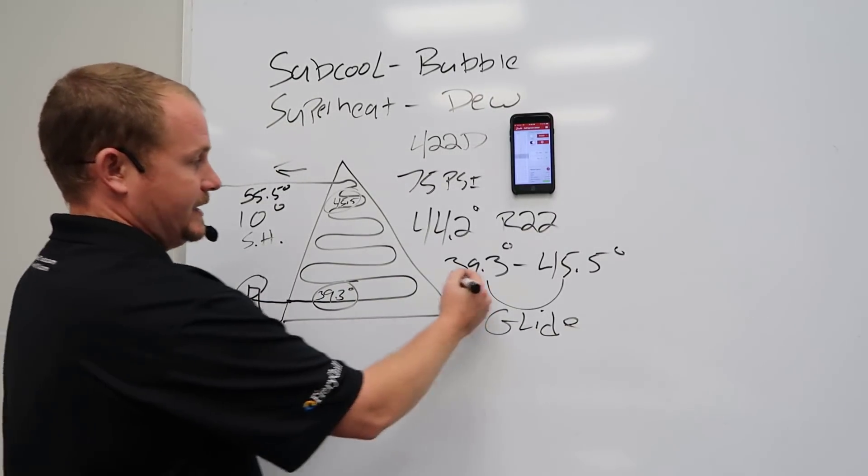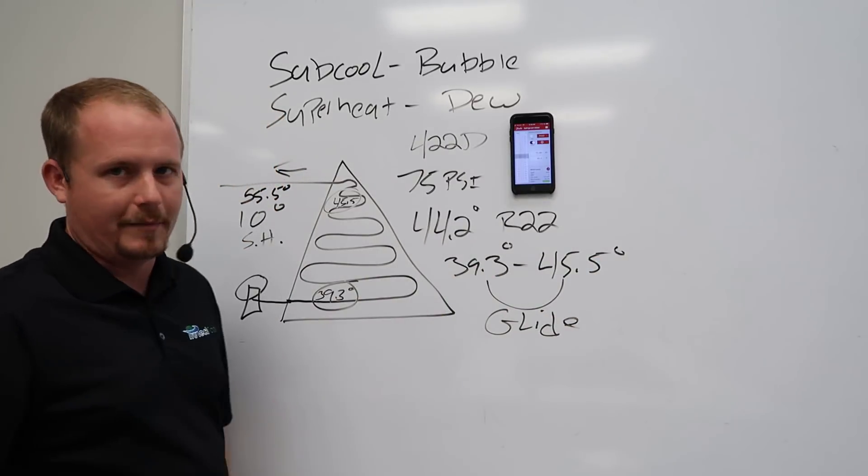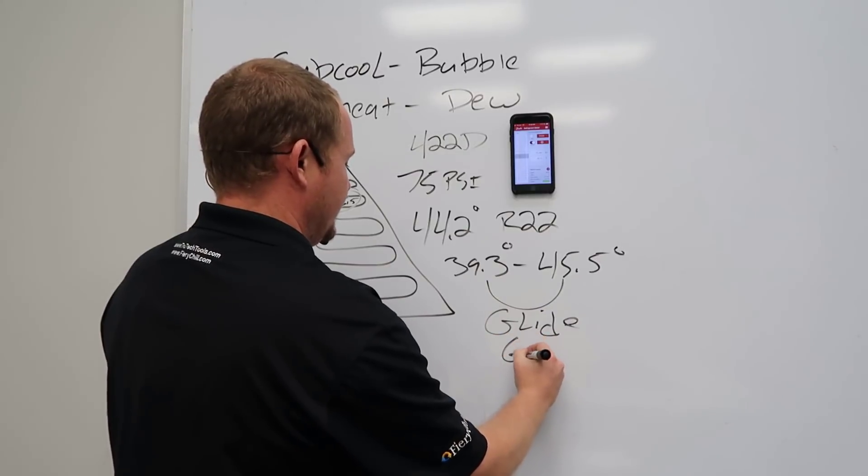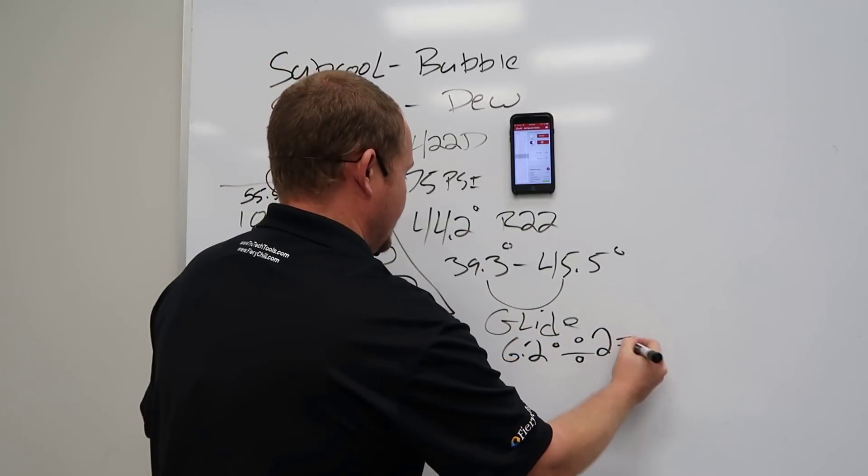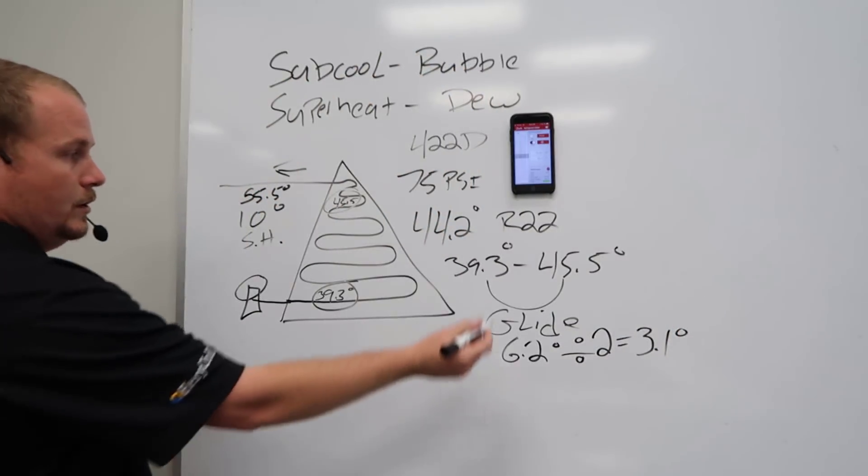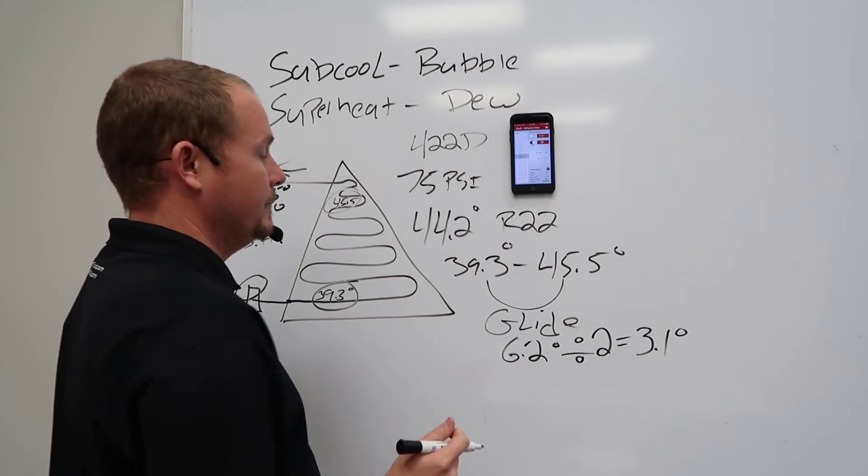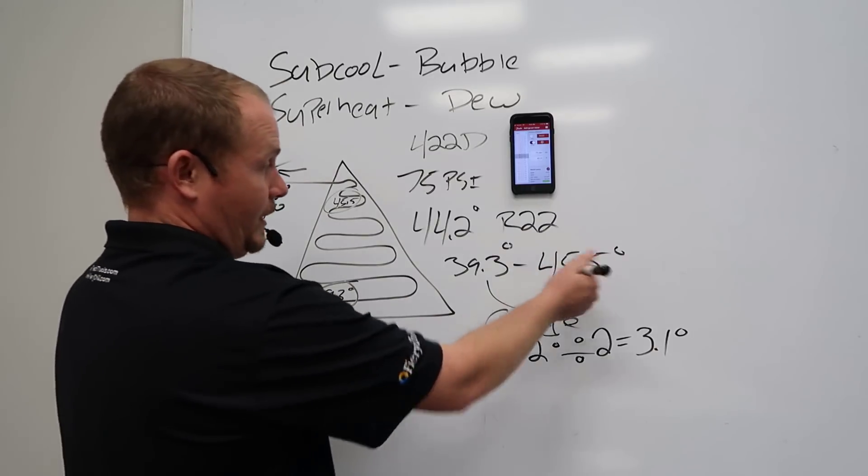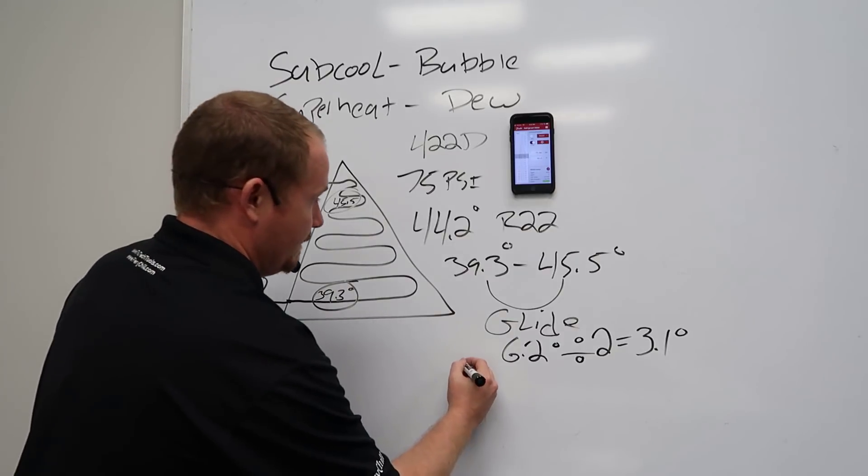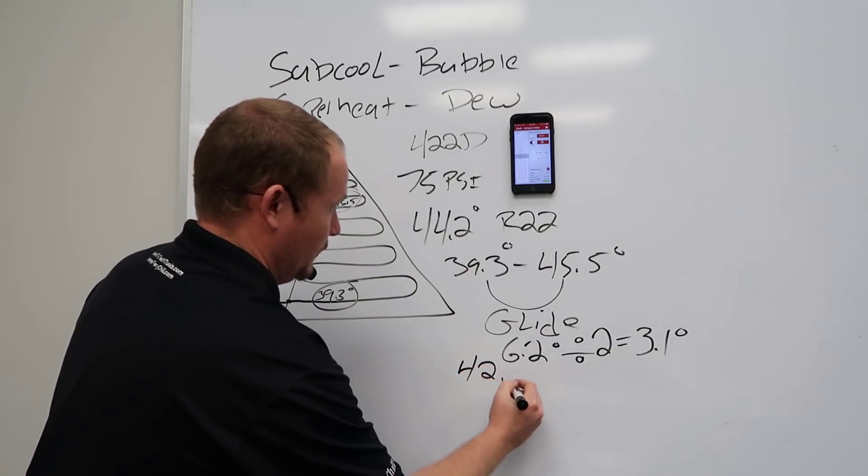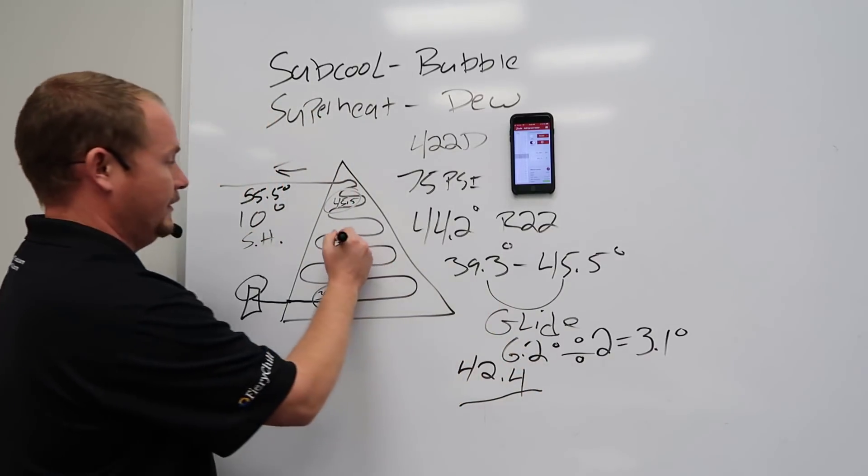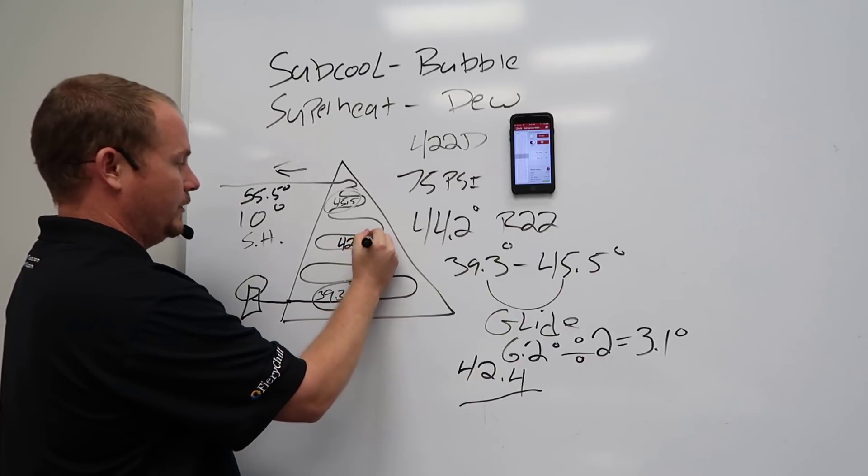What we do is we just take these two points, and I'm just going to do rough math here. We're going to say that it's 6.2 degrees of glide divided by 2 equals 3.1 degrees. So we take 39.3, we add 3.1 degrees, or we subtract 3.1 degrees from 45.5, and we come up with 42.4, and that 42.4 is now our average evaporator temperature, 42.4 degrees.